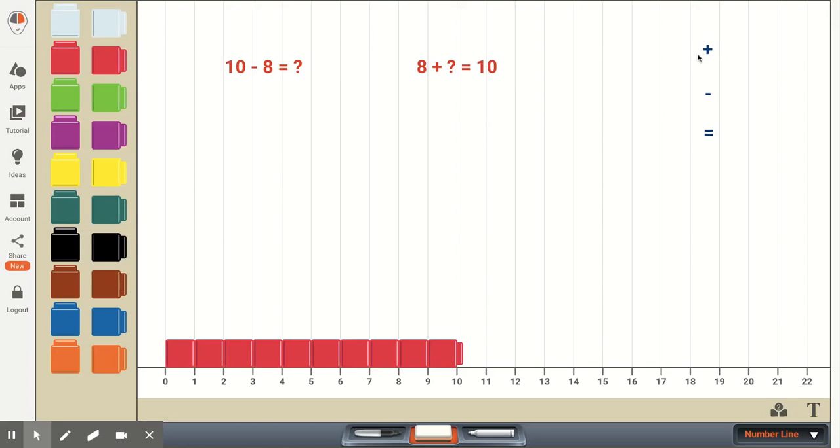The subtraction sign, or taking away, and then the equal sign, meaning that whatever the value is on this side of the sign is the same value as on this side of the equal sign.